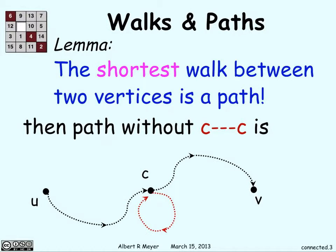So the path without that section that goes from c back to itself also goes from u to v and is shorter. So if we have any path that crosses over itself, we can just get rid of that part that loops around back into itself, and we still have a walk from u to v. Therefore the shortest walk from u to v is going to be a path.